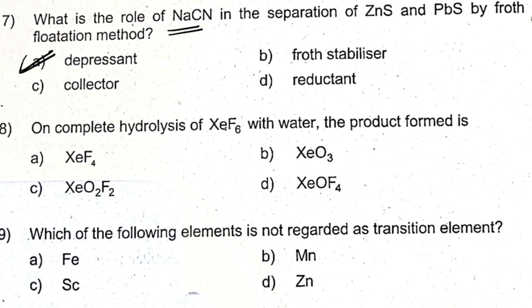On complete hydrolysis, it will produce XCO₃. The following element is not regarded as a transition metal: zinc, cadmium, mercury — these are not considered true transition metals.